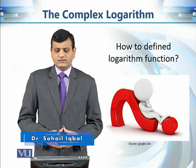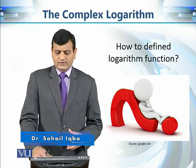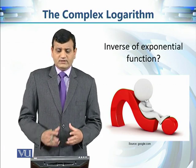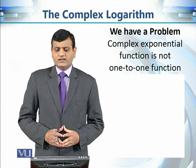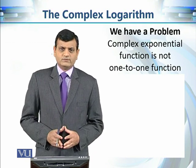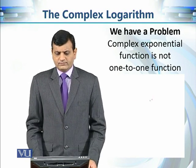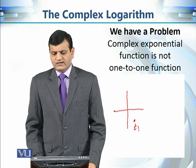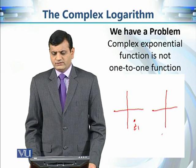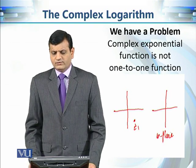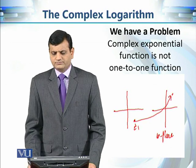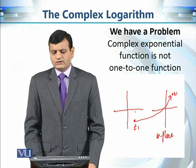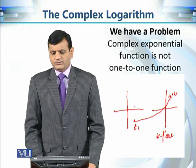The question is how do we define the complex logarithmic function — whether we can define it as the inverse of the exponential function or not. There is a problem in the complex case: the complex exponential function is not a one-to-one function. So why does this create a problem? If we have a complex number z₁, its image in the w-plane is some complex number w.